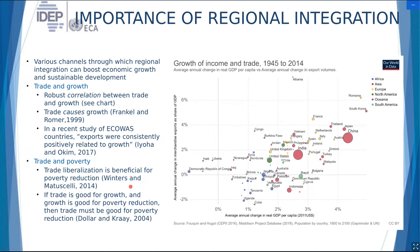They want to reap also the political benefits — peace and security, the idea of cooperation and diplomacy are obviously important political advantages. But let us focus on the economic benefits that follow from regional integration. On this chart, the vertical axis shows the annual change in merchandise exports as a percentage of GDP — basically the growth in trade — while the horizontal axis shows the growth in GDP per capita, the rate of economic growth. Each dot represents a country.